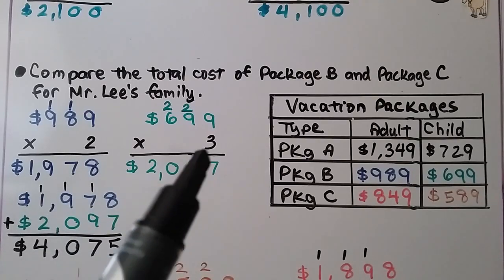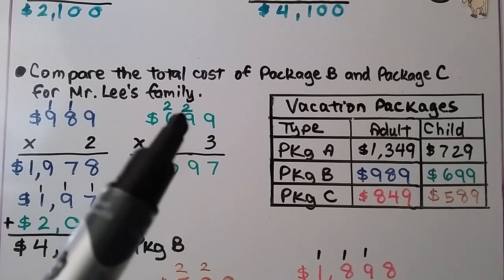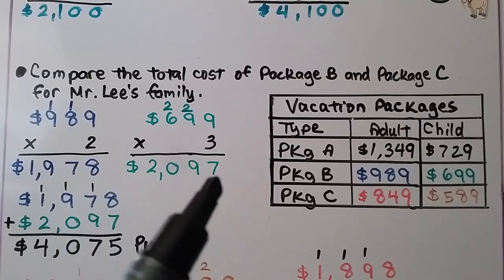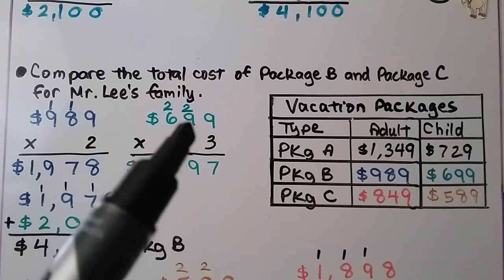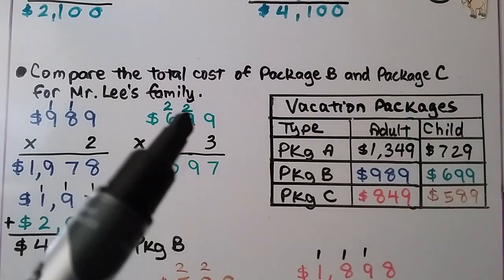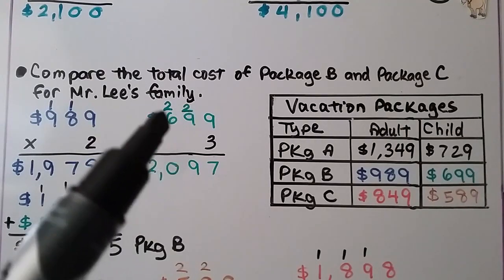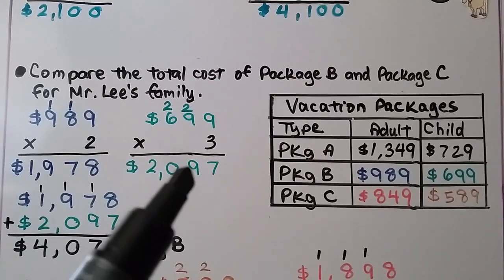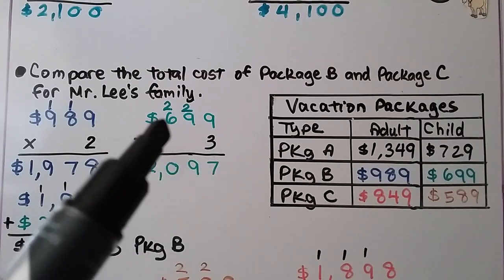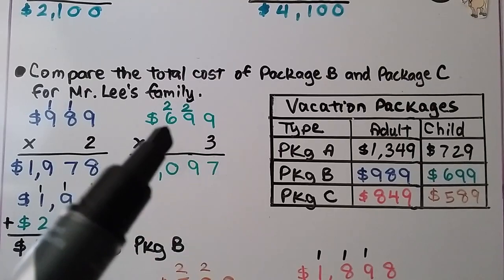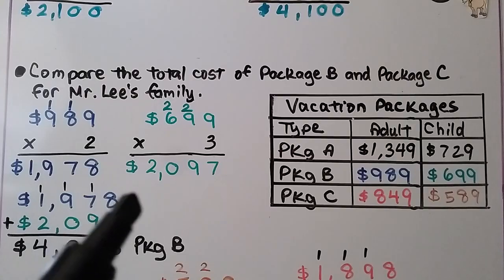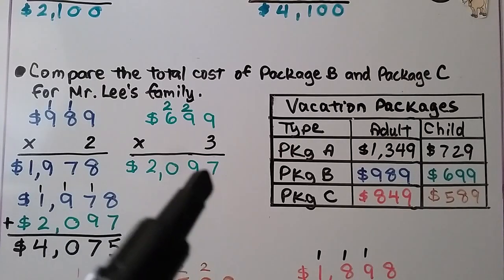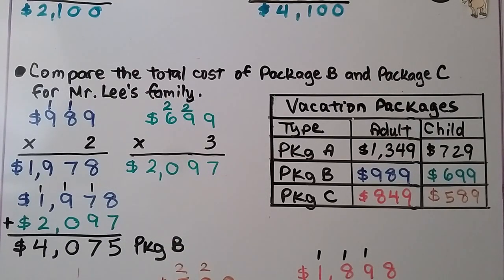For the children, we have 3 times 9, which is 27 — regroup the 2, put the 7 down. 3 times 9 is 27 again, plus the regrouped 2 is 29 — regroup the 2, put the 9 down. We have 3 times 6, which is 18, then 19, 20. We put down 2,097. So the children's cost is $2,097.